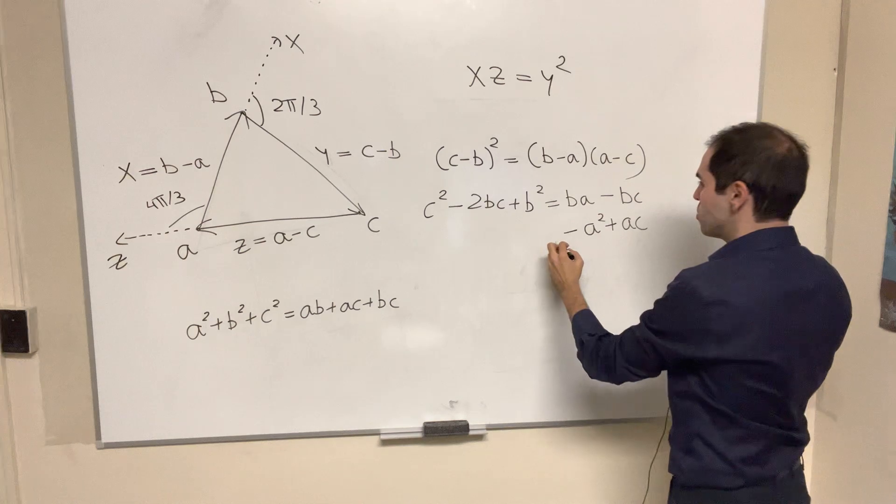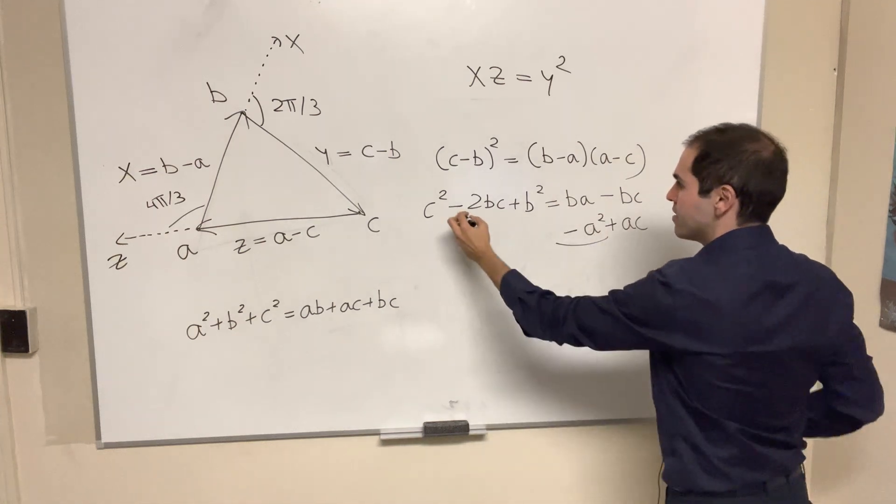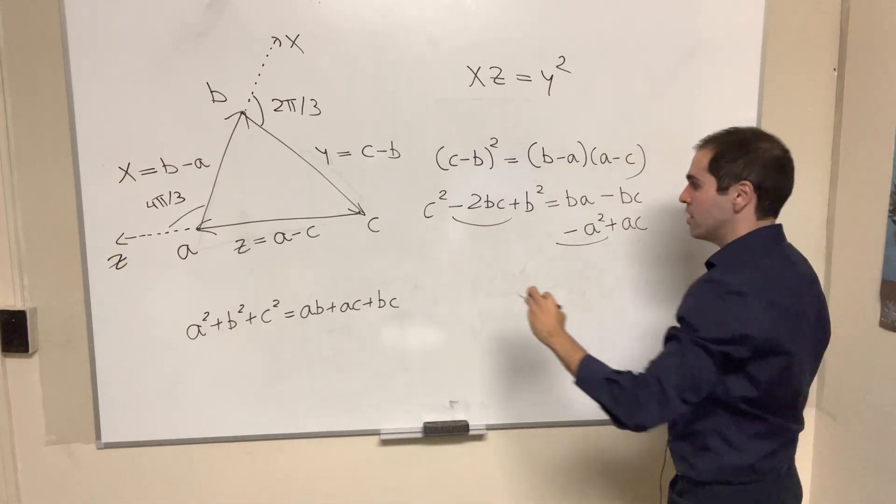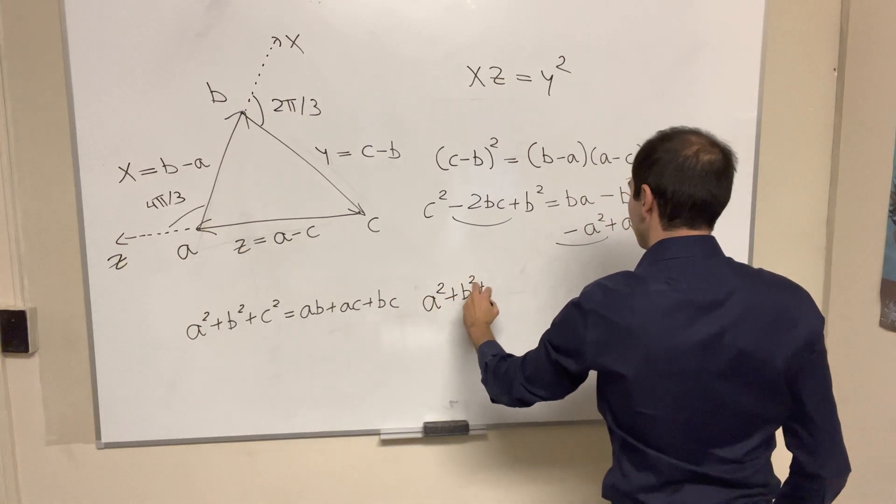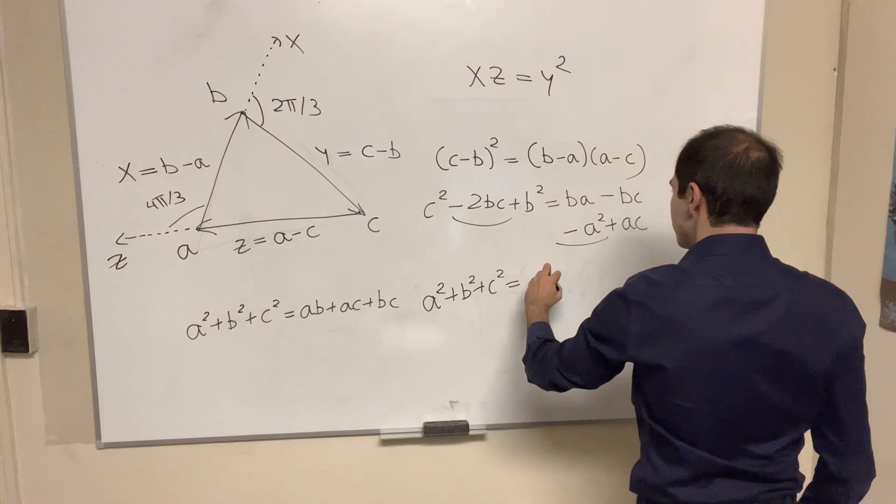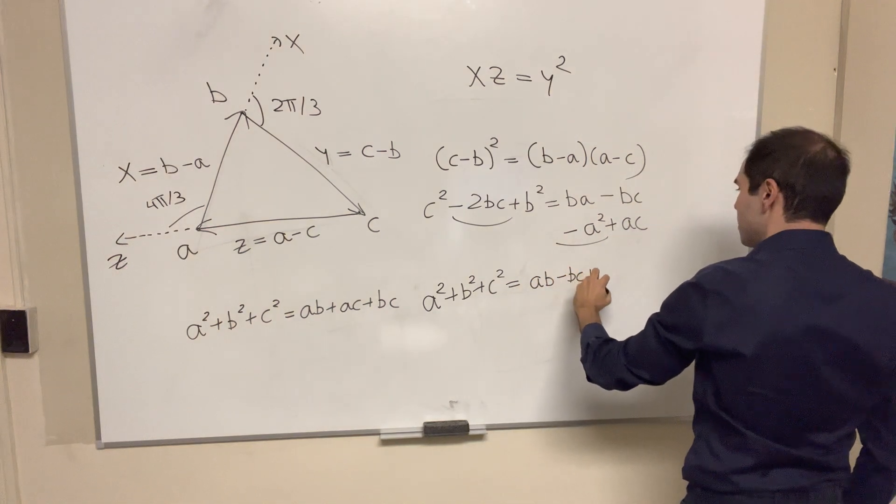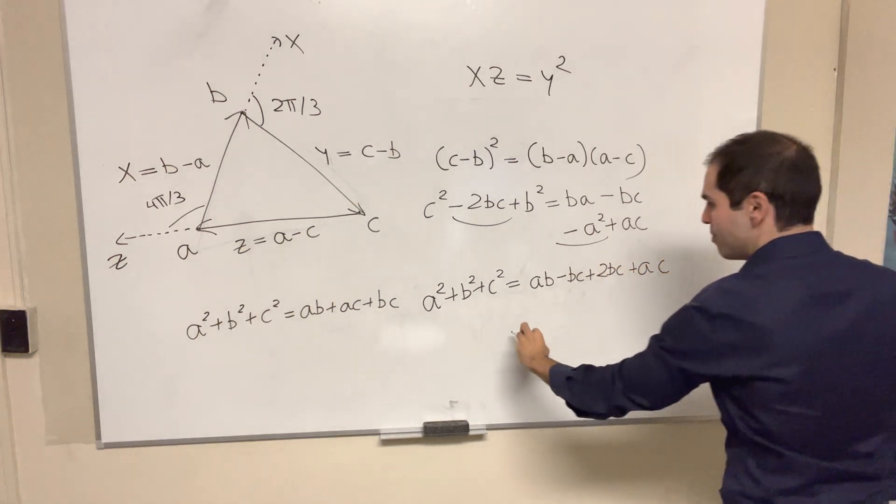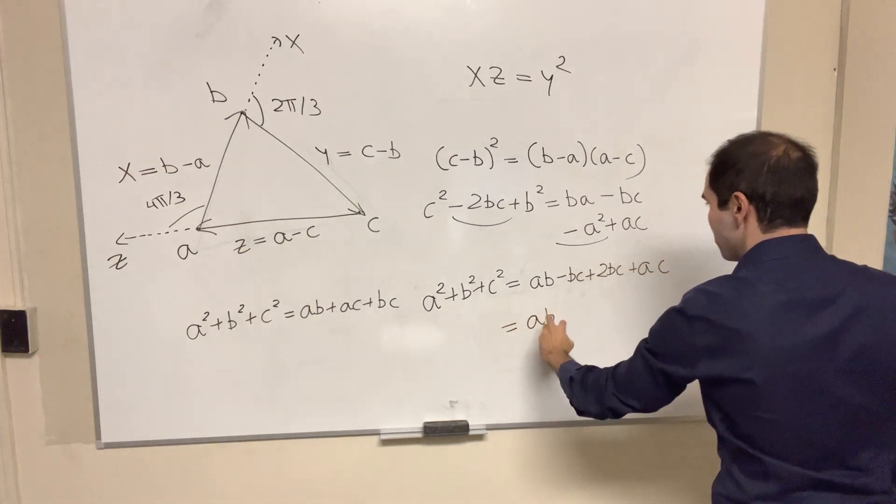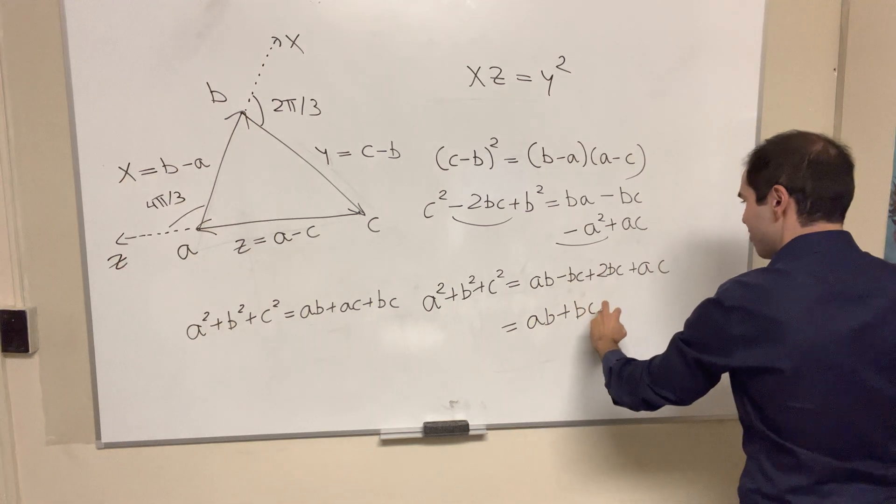And that's good. We just put the a squared on the left hand side, the minus 2bc on the right hand side. And you end up getting a squared plus b squared plus c squared equals ab minus bc plus 2bc plus ac. But then this just simplifies to ab plus bc plus ac.